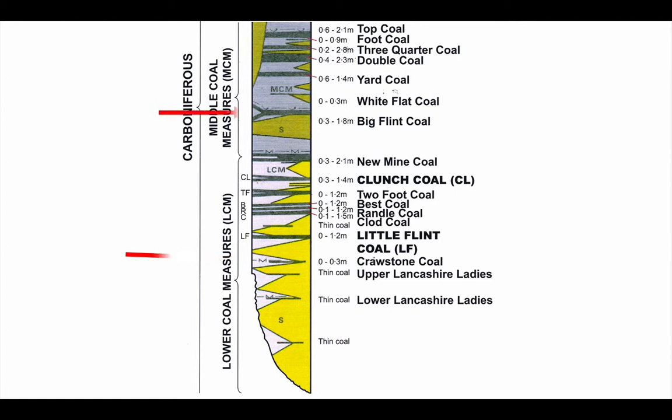We can even see details of the coal measures here. The Big Flint Coal is listed as changing thickness and shows that the coal seam actually splits in some places. With each of these methods of showing the sequence of beds, the cartographers are trying to represent what those beds are actually like.